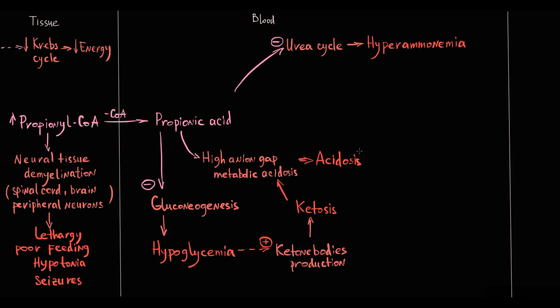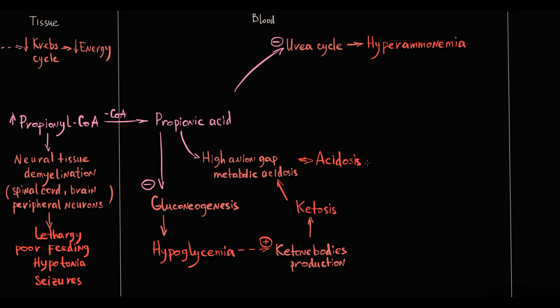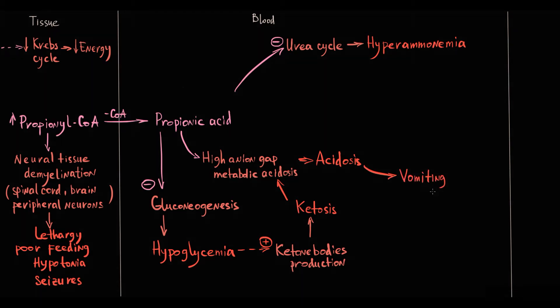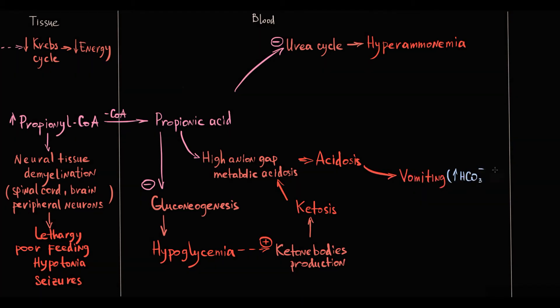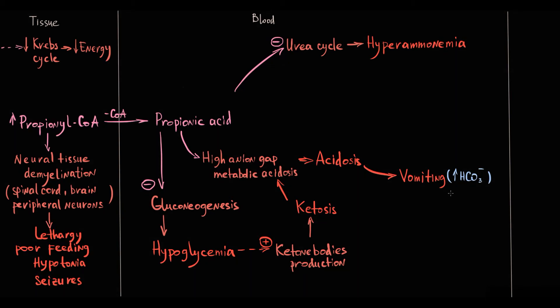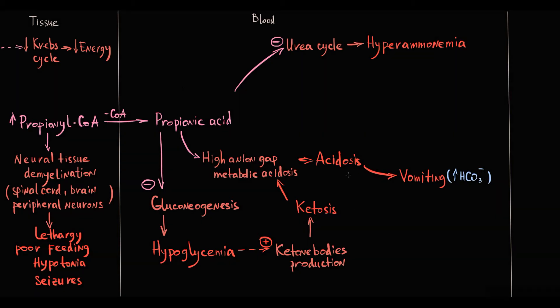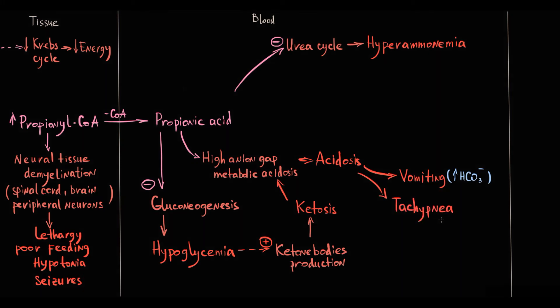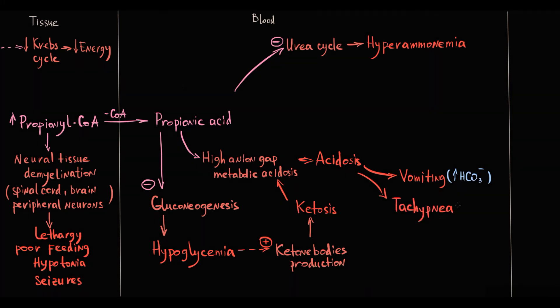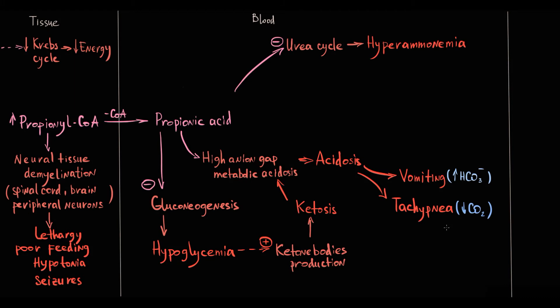Acidosis induces two compensatory responses. The first is vomiting, which stimulates parietal cells to produce more bicarbonates as a byproduct of hydrochloric acid production. Severe acidosis also induces tachypnea, because an increase in breathing rate decreases blood CO2 level, thereby increasing blood pH.